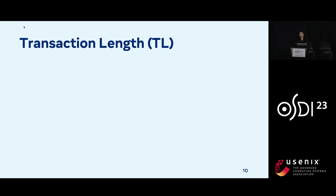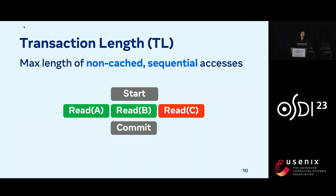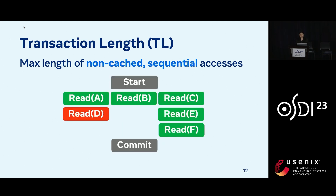To provide a framework for caching in the transactional context, I'll first introduce transaction length, which we define as the maximum length of non-cached sequential accesses. As an example, we have a transaction reading A, B, and C. C isn't in the cache, so we have a transaction length of one. If C is in the cache, then the transaction length becomes zero. For a more complex example with multiple layers of dependencies, if G is the only key not cached, our transaction length is still one.